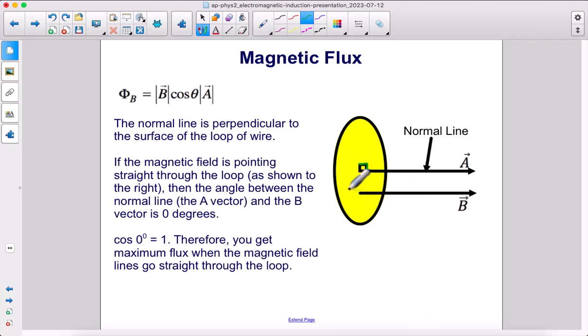If the magnetic field is pointing straight through the loop, as shown here, then the angle between the normal line and the magnetic field vector is zero degrees. They're parallel. There's a zero degree angle between those vectors. Cosine of zero degrees is one. So this whole thing here just becomes one. Therefore, you get maximum flux when the magnetic field lines go straight through the loop, which does make common sense.